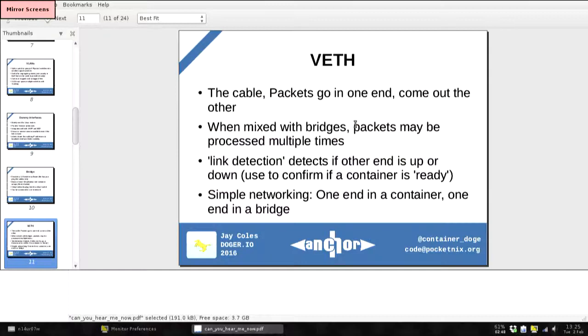If you've got a virtual switching device, you of course need virtual cables — and this is exactly what a virtual Ethernet pipe is. Packets go in one end and come out the other. The link detection is nice in that if one end of the link is down, you can see it. I've seen this used in a couple of ways, but my favourite is waiting to see if a container is ready for network traffic. The network doesn't come up until about halfway through the boot process, and at that point it's normally ready for some traffic — so you can just wait for that link to change and then add it to the load balancer.